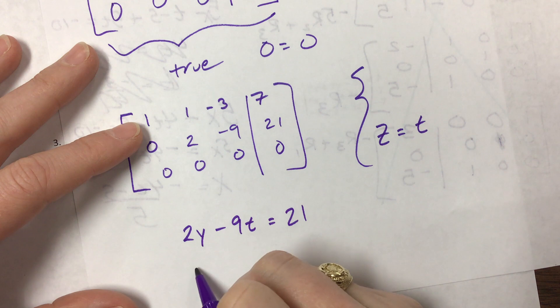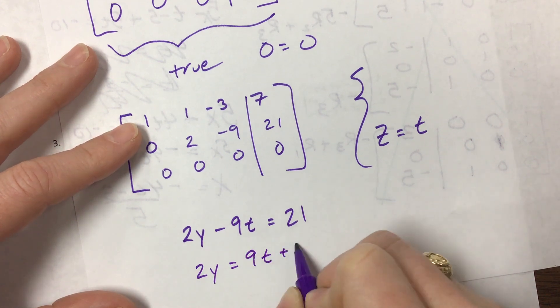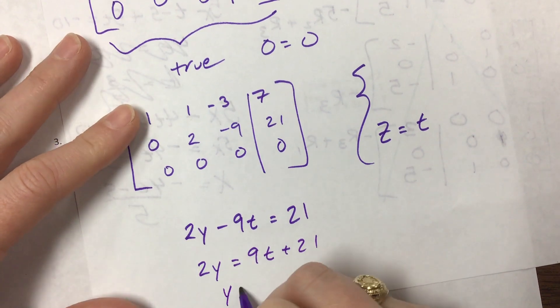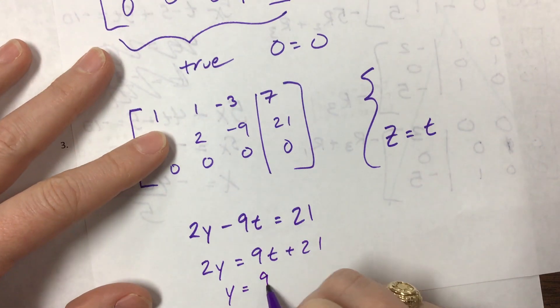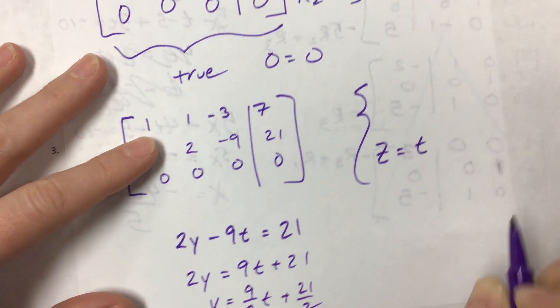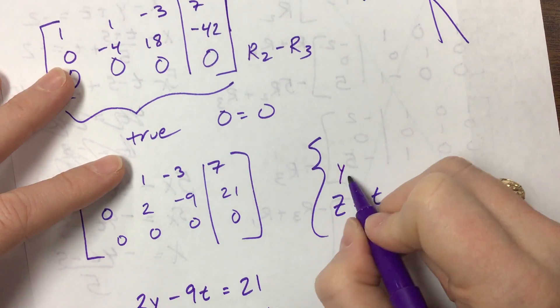Okay, 2y equals 9t plus 21. Here's something - I can not be wrong this time. y would be equal to 9 halves t plus 21 halves, which is just - I mean there's no way around it, that's just annoying.